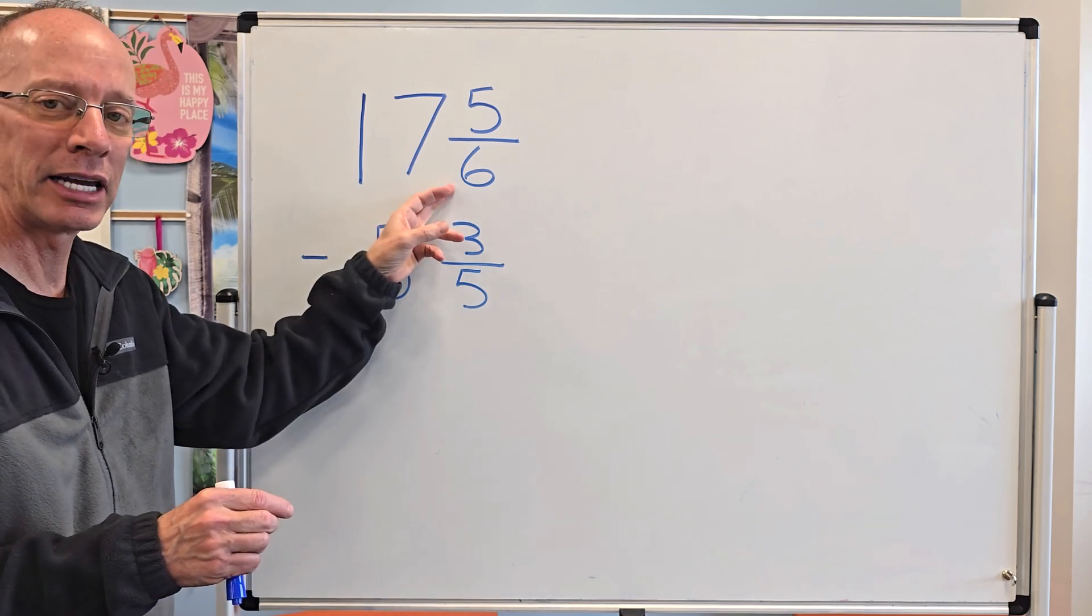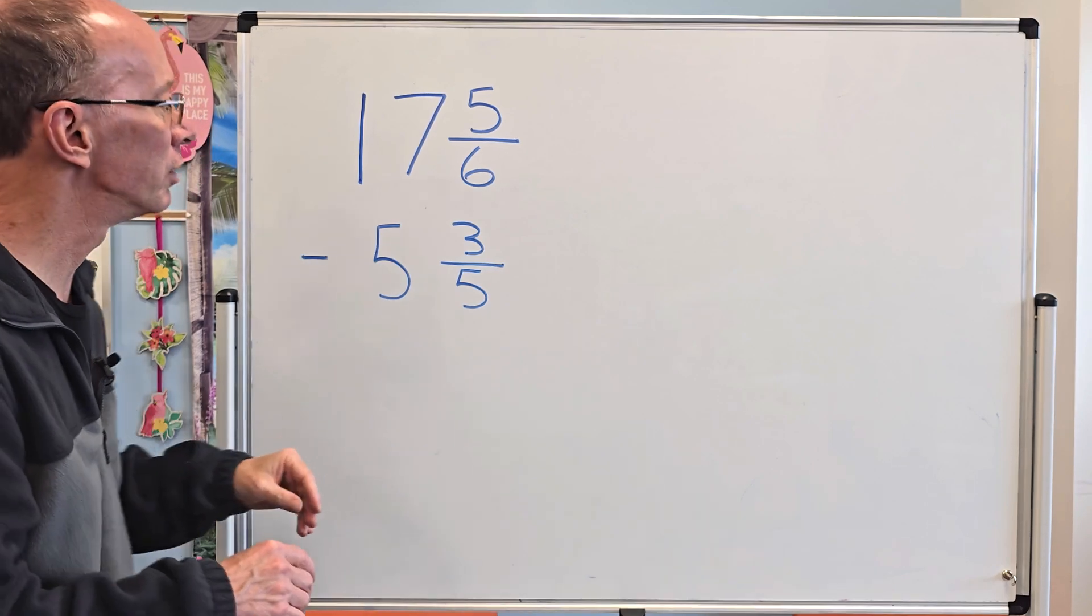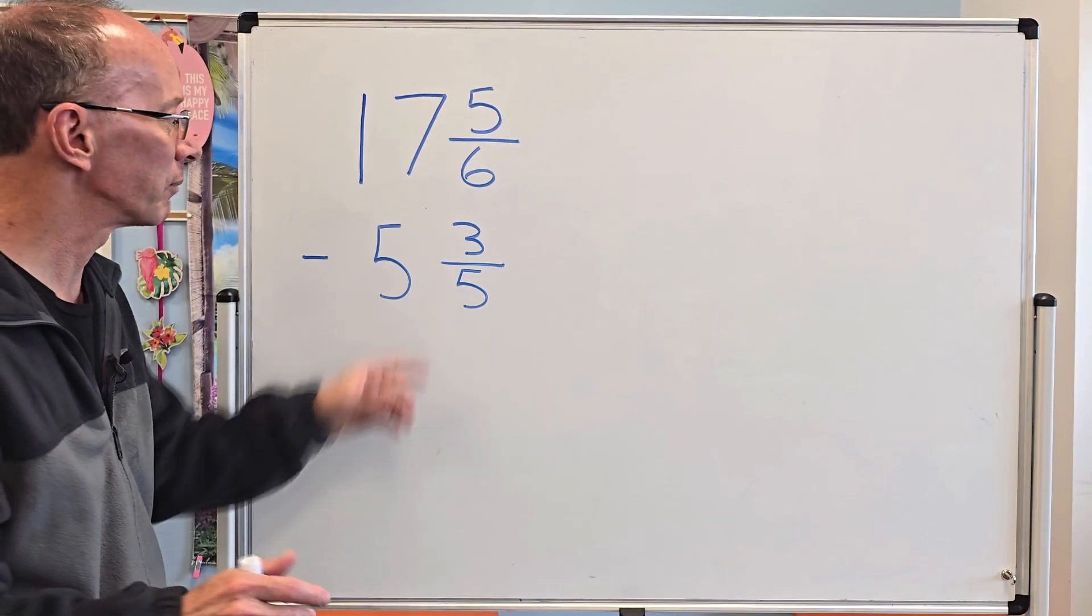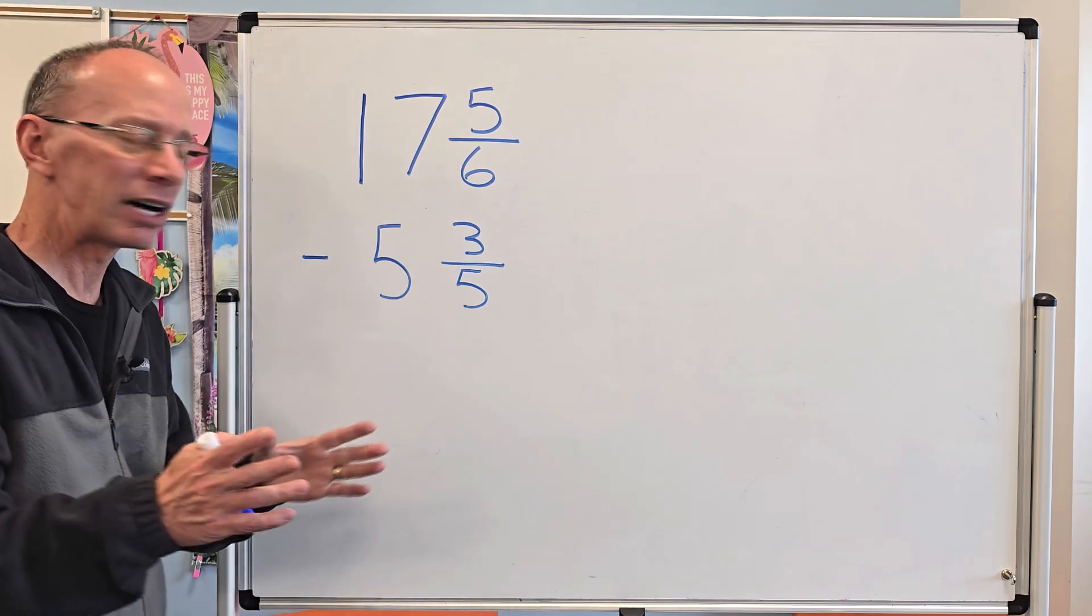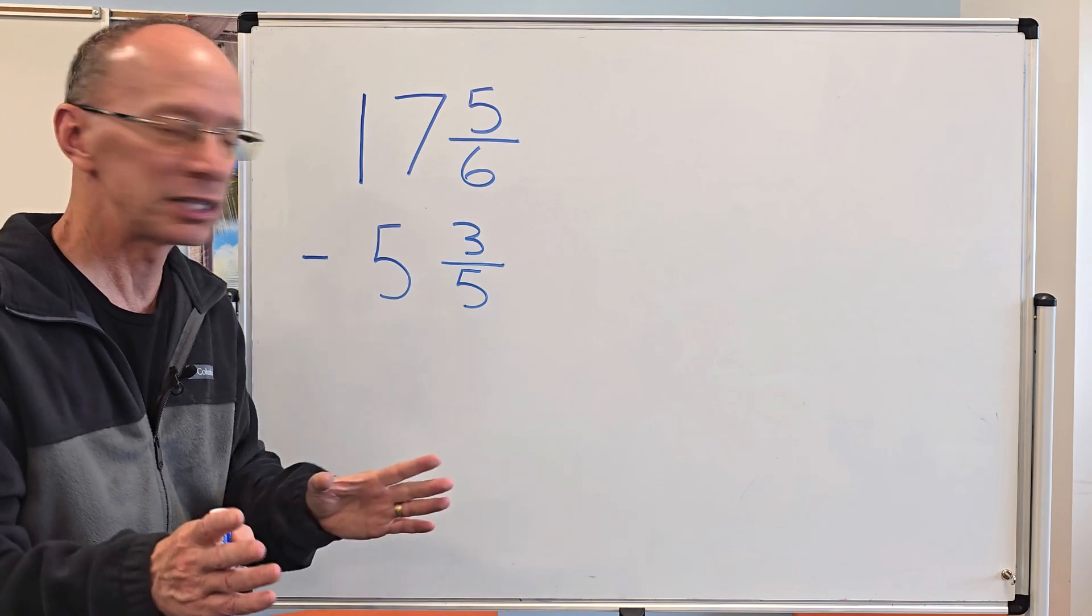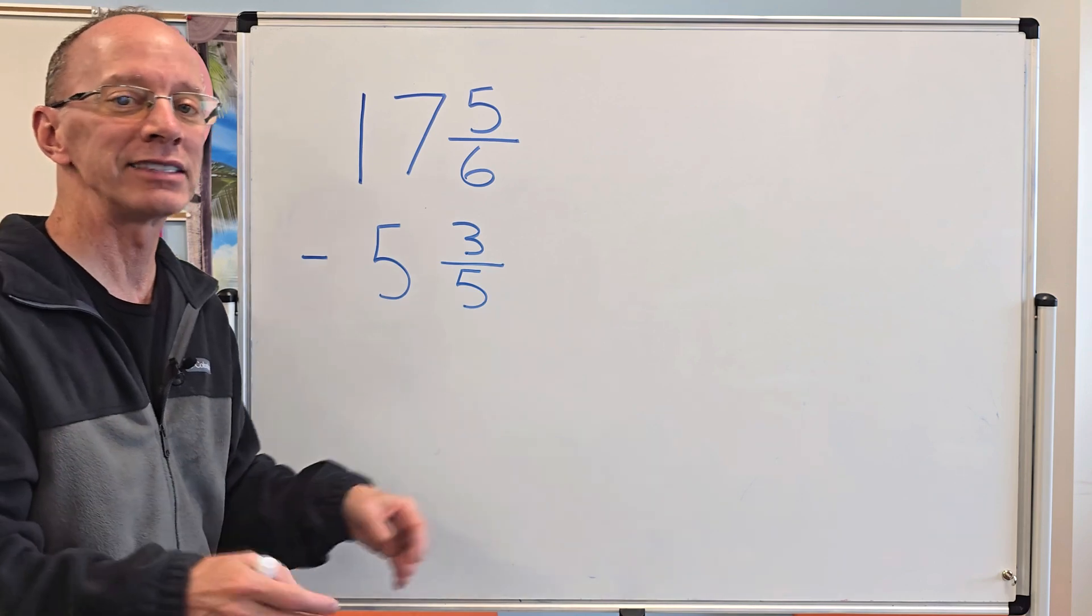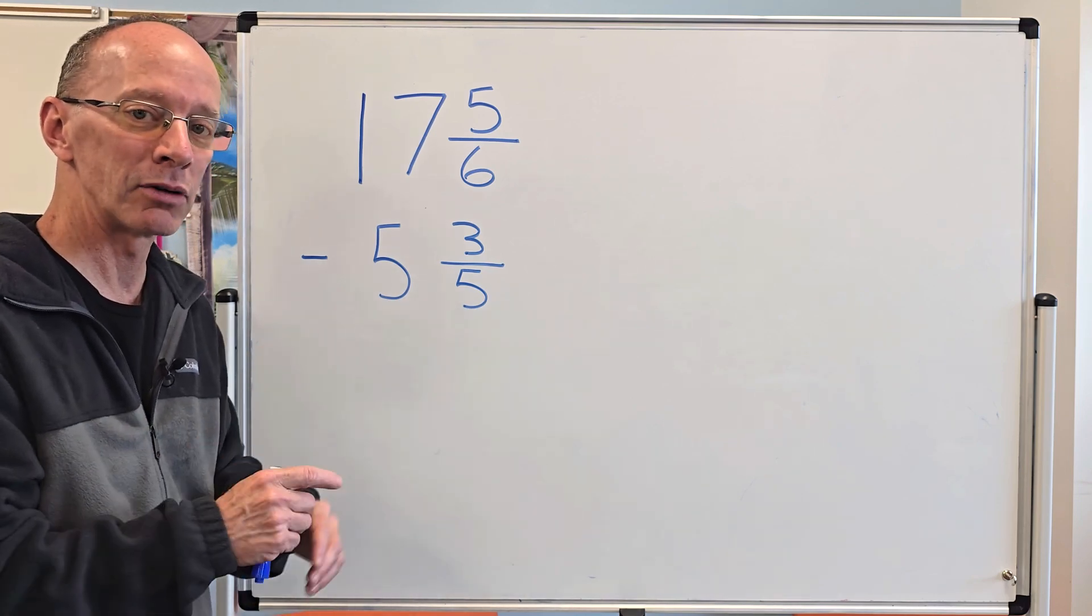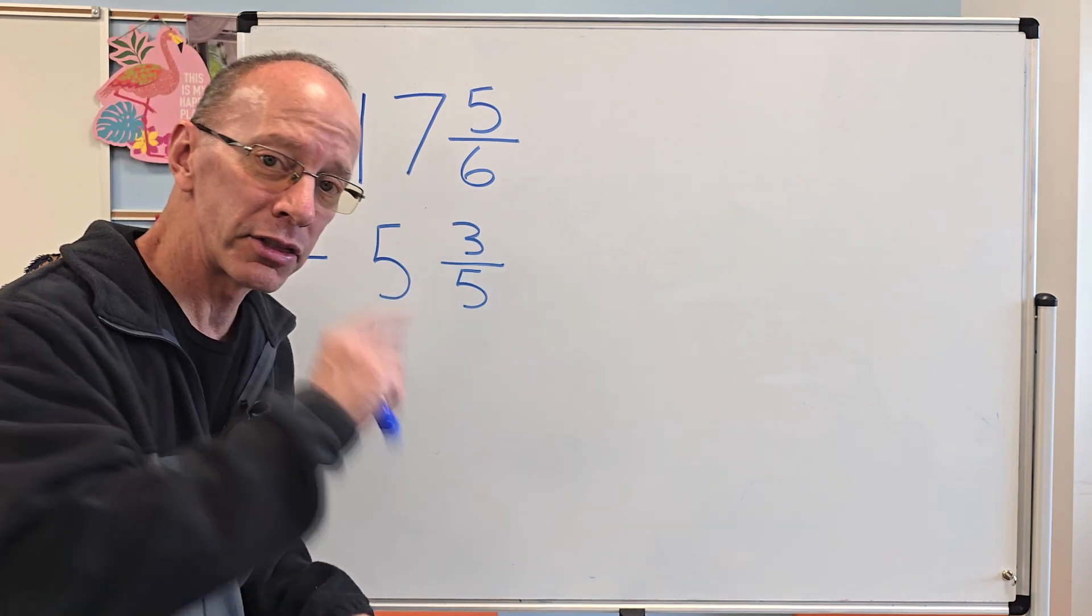First thing I do is take a look at the denominator because I want common denominators. I have 6 and 5. When you're figuring out the least common multiple, try multiplication right away. 6 times 5 would be 30, and I know that's going to be my least common multiple, so I need to change my denominator to 30.